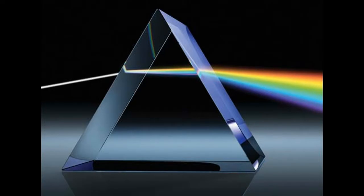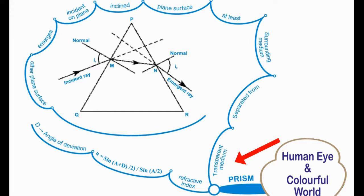A prism can be defined as any transparent medium separated from the surrounding medium by at least two plane surfaces which are inclined at a certain angle, in such a way that light incident on one plane surface emerges from the other plane surface.